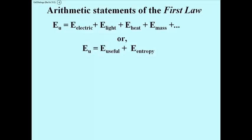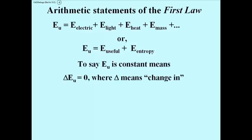To make it very simple, the total amount of energy in the universe is the sum of all the energy that is useful and all of the energy that is entropic or useless at any given moment. To say universal energy is constant means that the change in universal energy over time must equal zero — it is neither created nor destroyed.